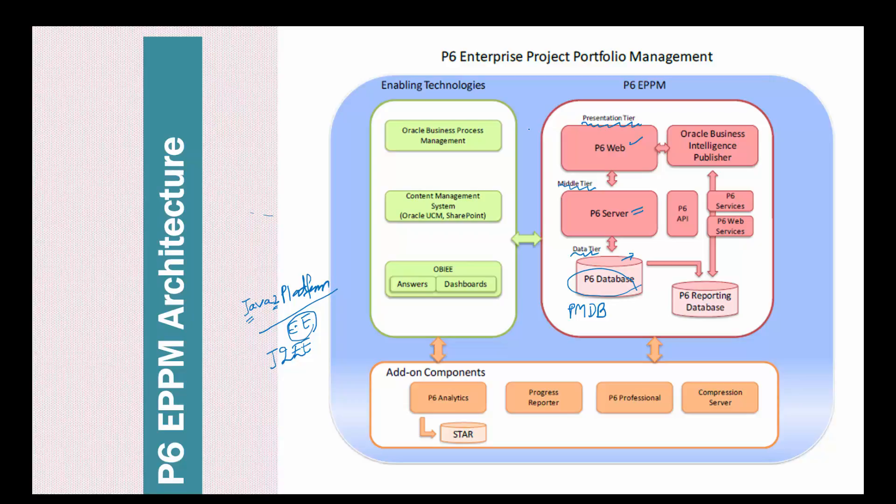Oracle Primavera P6 Enterprise Project Portfolio Management uses an RDBMS as its data repository. Depending on the data set size — maybe 1 GB, maybe 100 GB, maybe 10 terabytes — that depends on the organization. You cannot use the same system for every company. The server can be standalone or clustered. If it is handling large data, you can use a clustered server with a more sophisticated architecture. The database could be more complex, with backup systems, and everything could scale accordingly.